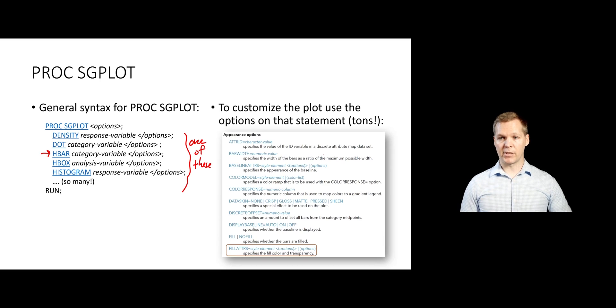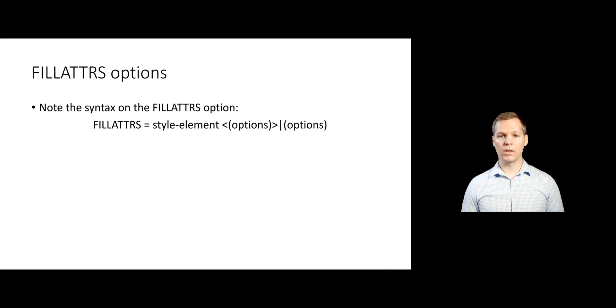We can customize our output using options. And there are tons and tons of options to change the appearance and things like that of our different plots that we do. And again, those are going to go after a slash, after we specify the variables that we want to plot. One of the main things that we're going to change will be, for instance, things like the fill attributes. So how our fill color is done and the transparency of that color as well.